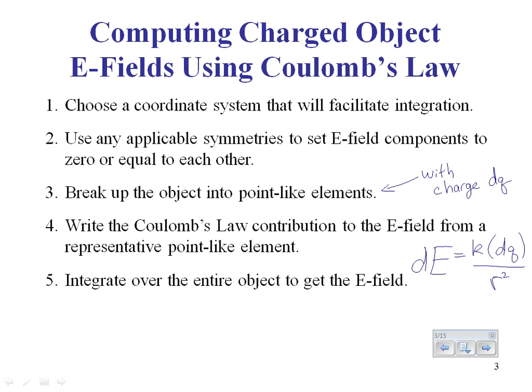When calculating the electric field of a continuously charged object, you set up a coordinate system and look for any electric fields that might cancel each other out to simplify the setup. Then you break the object up into a bunch of point-like elements, each with charge dq, and add up the electric field contributions of each one. You write down Coulomb's Law for each element: dE = k dq / r², then integrate all the pieces to find the total electric field.